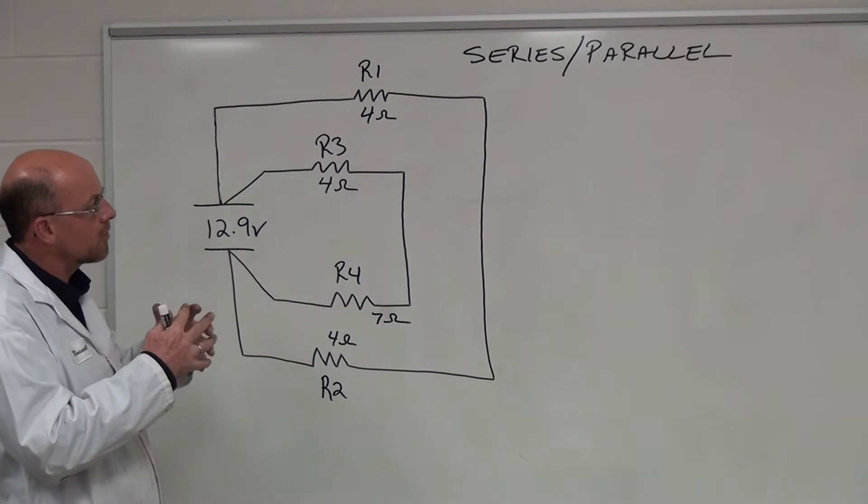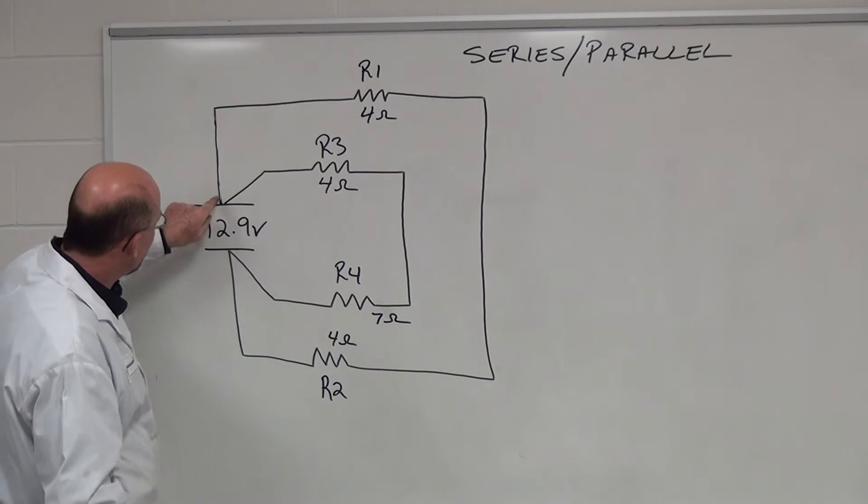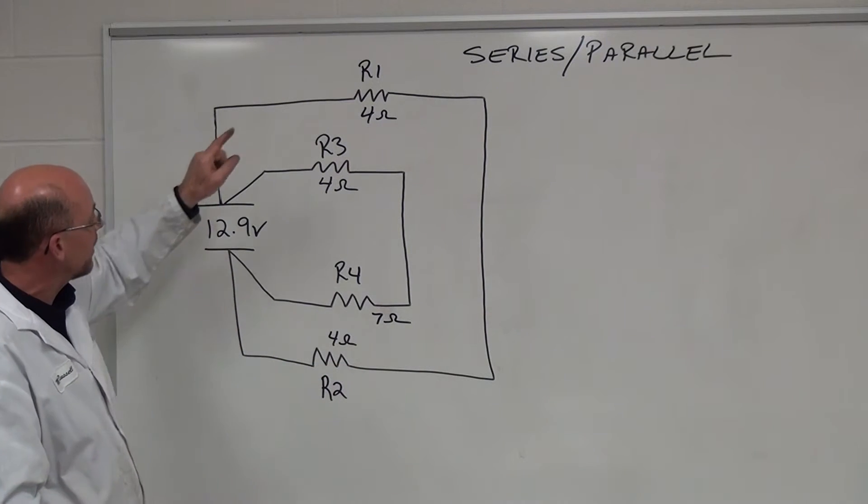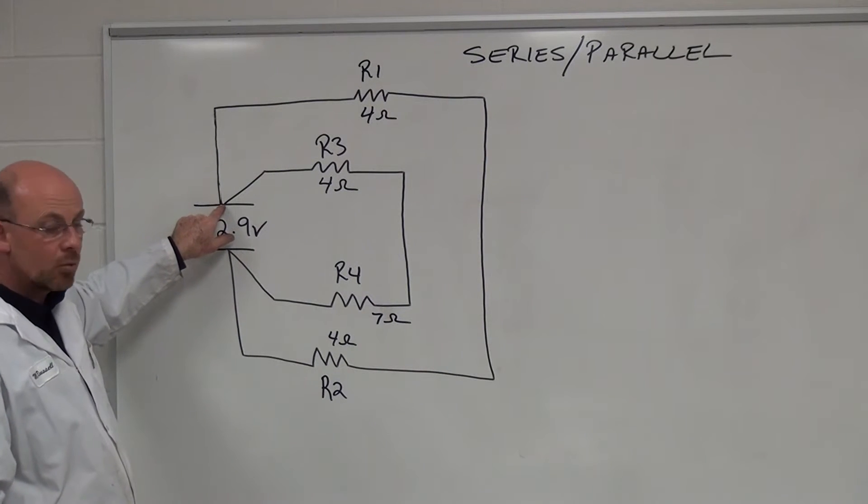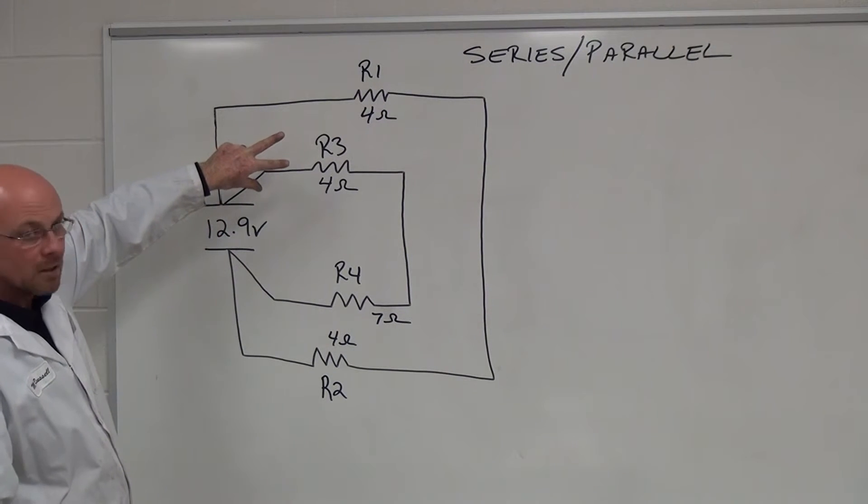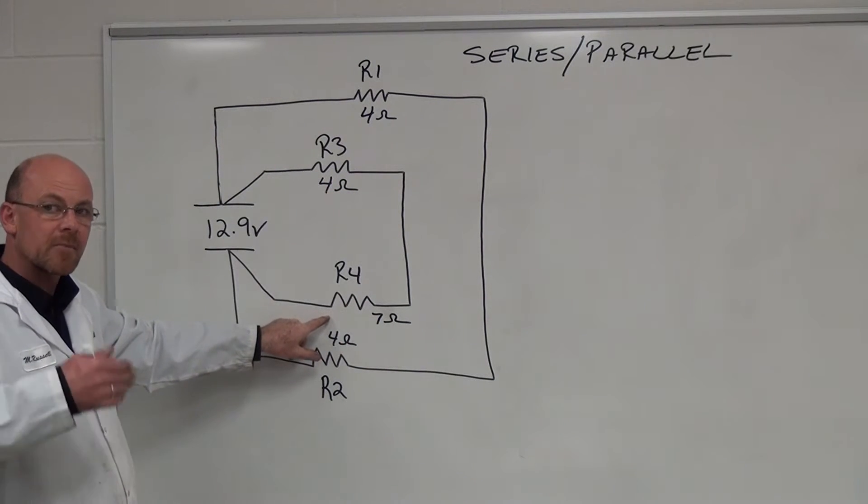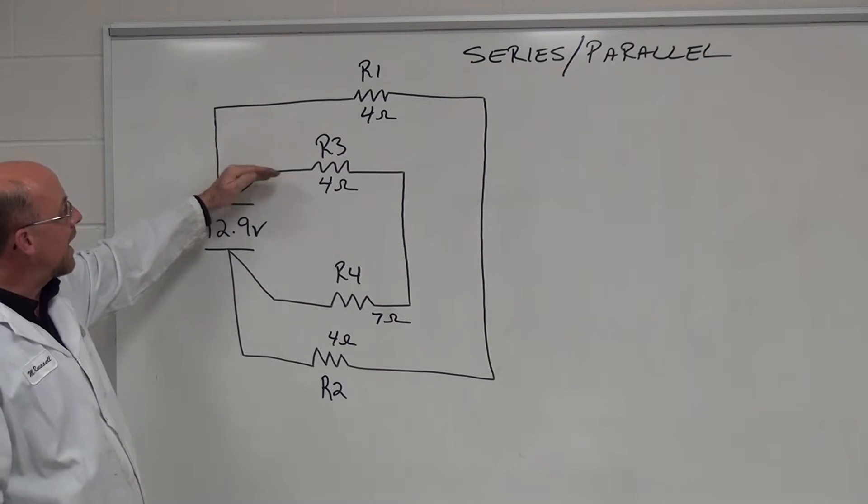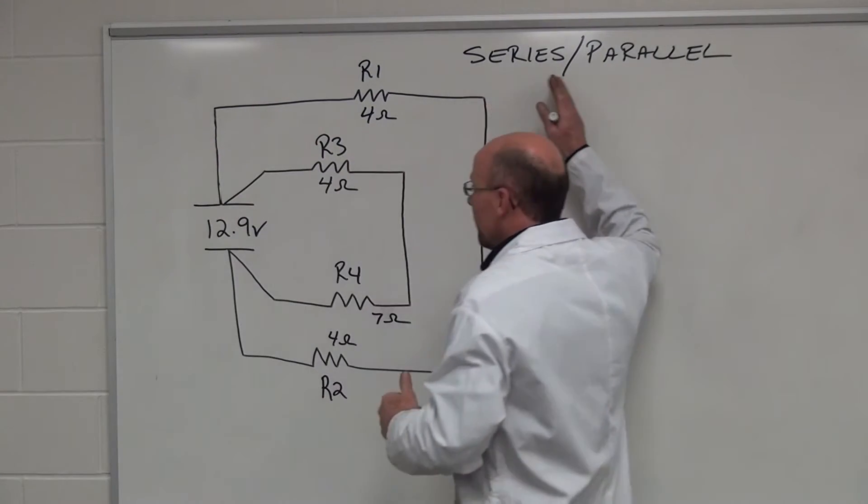So if we take a look, one of the characteristics of a series circuit is that there is only one path for current to flow. In this particular branch we only have one path for current to flow with two resistors in series. But right off of the battery and back to the battery we're splitting right here, which means we are now a parallel circuit because we have more than one path and more than one load. The second pathway also has two resistors in series. So we have two series circuits connected in parallel, defining a series-parallel circuit.